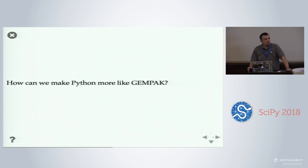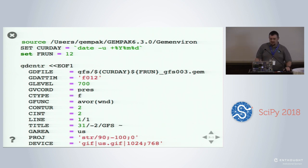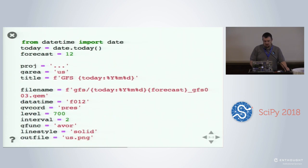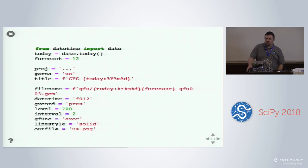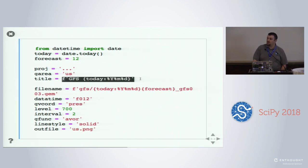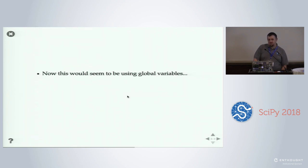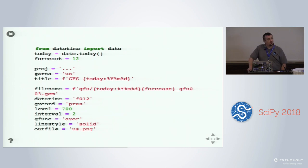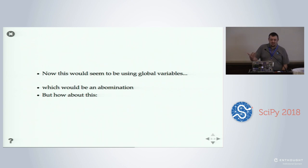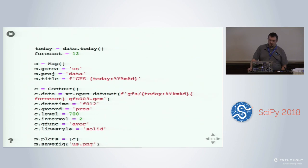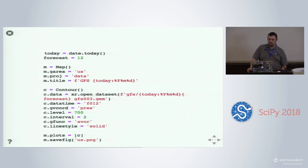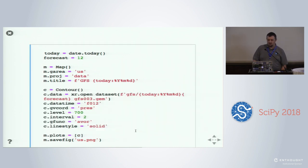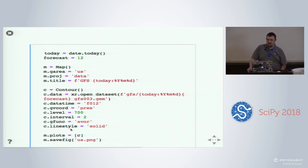So how can we make Python more like GEMPACK? Going back to the configuration approach — we're setting some variables and then running something. Let's do a quick conversion: turn it into Python using the datetime module, date.today(), and f-strings to format the code. That's a decent start. It's all just setting variables and running something — which would mean global variables, and that would be an abomination. But maybe a few simple classes: make a map and set its attributes, create a contour object and set attributes on that. That still looks a lot like what we did with GEMPACK and a lot less like the 43-line monstrosity we started with.